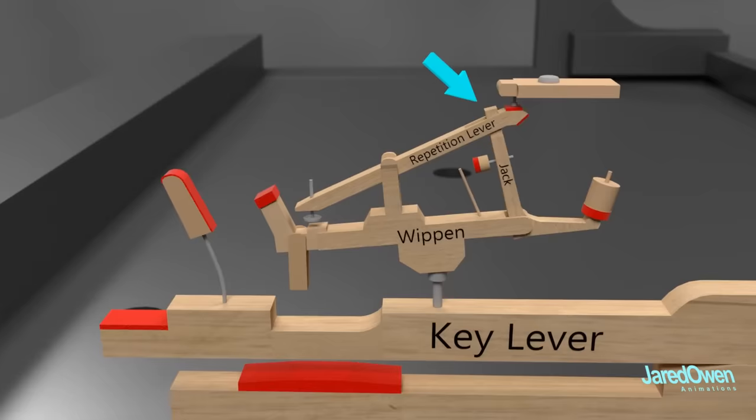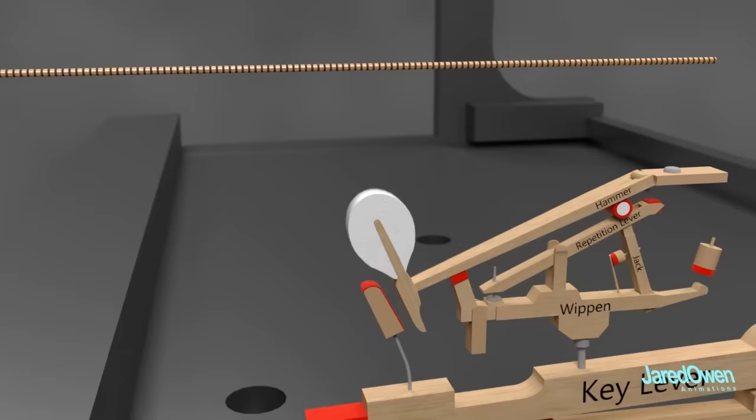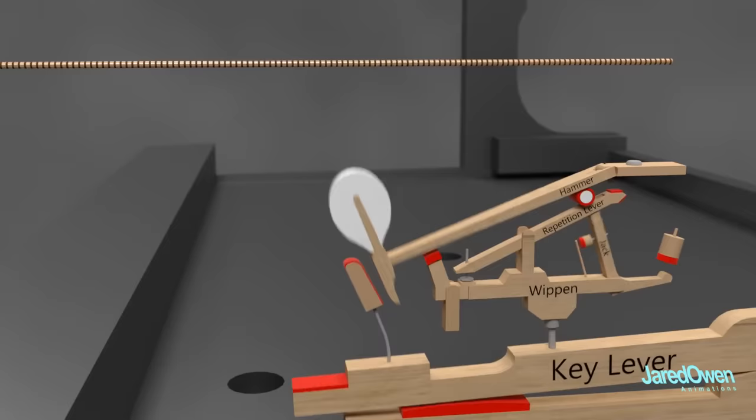And finally, we have the hammer. The top of the jack is what gives the hammer the final push. The harder a key is pressed, the harder the hammer hits the strings, which means a louder sound. This also means that if you press the key soft enough, you won't hear any sound. Notice how a key can be pressed repeatedly and the hammer still works.